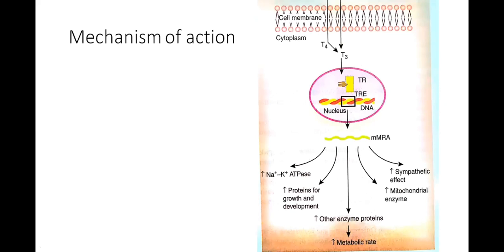In summary, T4 and T3 enter the cytoplasm due to their lipophilic nature, T4 is converted to T3 by deiodinase, and T3 binds to nuclear receptors. The thyroid hormone response element (TRE or HRE) is activated, DNA is transcribed to mRNA, and mRNA enters the cytoplasm to form new proteins by translation. These new proteins: increase Na/K ATPase pump activity, support growth and development, synthesize metabolic enzymes to increase metabolic rate, increase mitochondrial enzymes, and increase sympathetic effects.